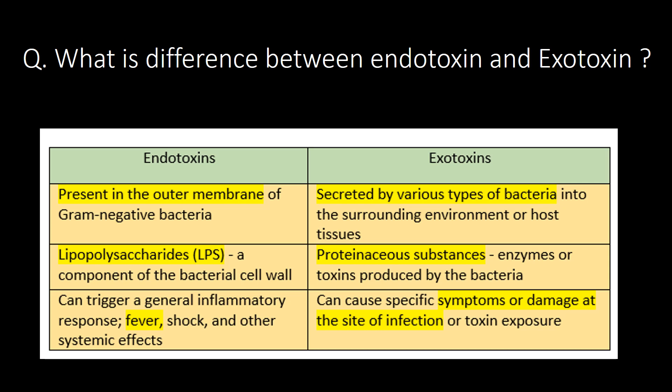What is the difference between endotoxins and exotoxins? You can refer to the table below. Endotoxins are present in the outer membrane of gram-negative bacteria, whereas exotoxins are secreted by various types of bacteria. Chemically, endotoxins are lipopolysaccharides and exotoxins are proteinous substances. Endotoxins can trigger a general inflammatory response like fever, shock, and other systemic effects, whereas exotoxins can cause specific symptoms or damage at the site of infection.